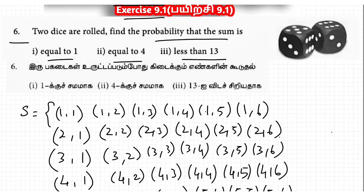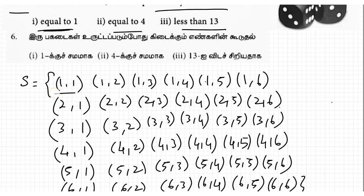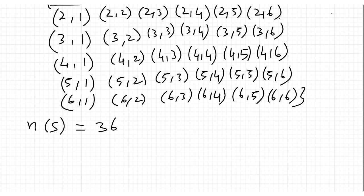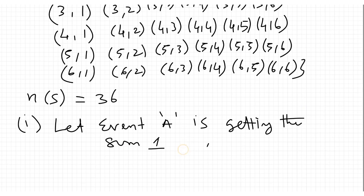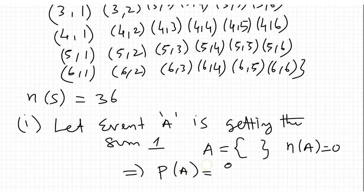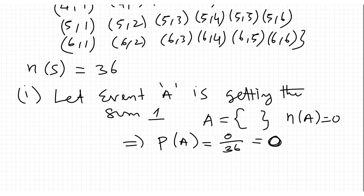Now, sum is equal to 1. The first element is (1,1) and 1+1=2. So sum equal to 1 is not possible. Let event A be getting sum 1. The number of elements is 0, so n(A) = 0. P(A) = n(A)/n(S) = 0/36 = 0. It is an impossible event.